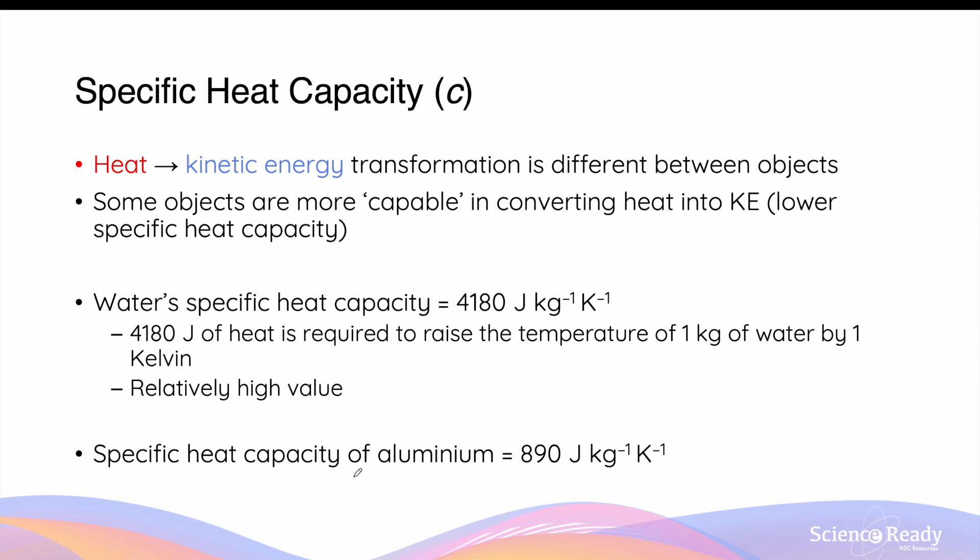For example, the heat capacity of aluminum is only 890 joules per kilogram per Kelvin. So if we want to increase the temperature of one kilogram of aluminum by one Kelvin, we only need 890 joules of energy.